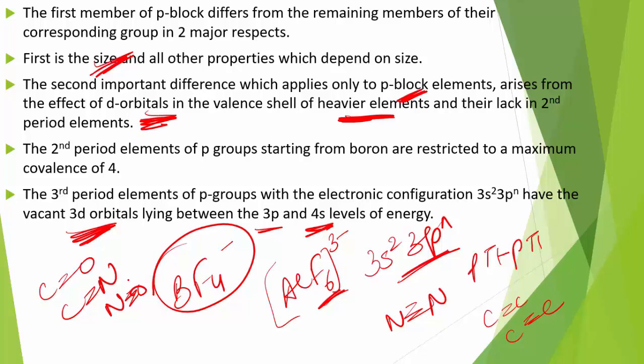This type of pi bonding is not particularly strong for heavier P-block elements. Heavier elements do form pi bonds, but using d-orbitals — forming d-pi, d-pi or d-pi, p-pi bonds rather than p-pi, p-pi bonds.